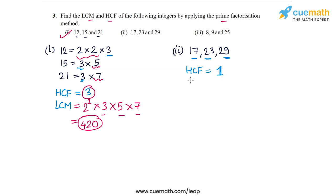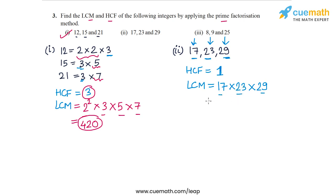The LCM is the product of the largest power of each prime factor in the set of numbers. 17 occurs once in the first number and does not occur in the other two, so 17 will occur once in the LCM. Similarly, 23 occurs once in the second number only, so 23 will occur once in the LCM. 29 occurs once in the third number, so 29 will occur once in the LCM. The LCM will be 17 times 23 times 29, which equals 11,339. So the HCF is 1 and the LCM is 11,339. That completes part 2.